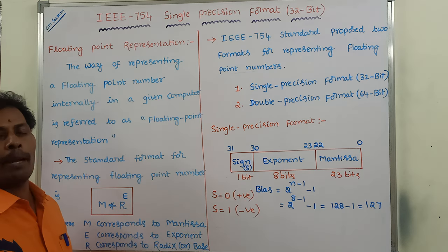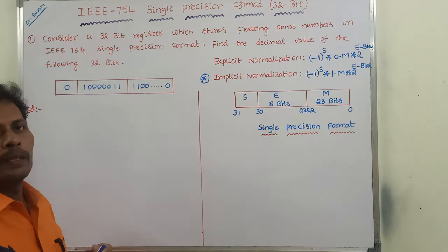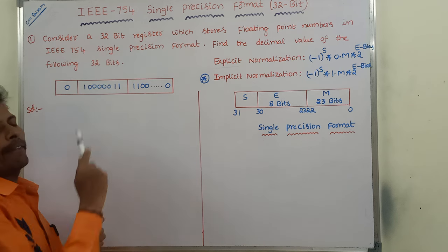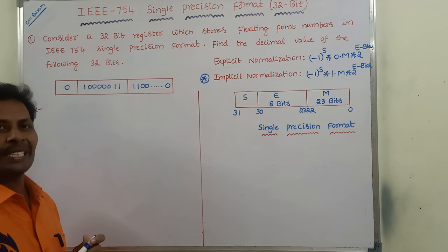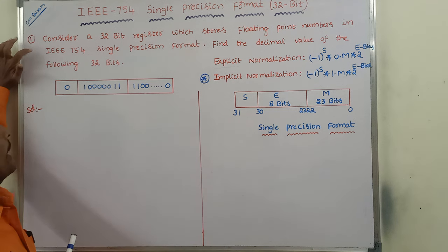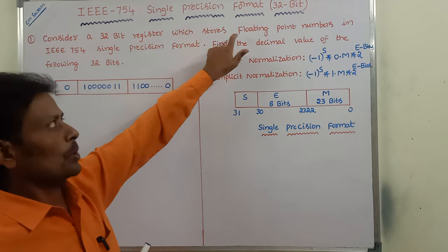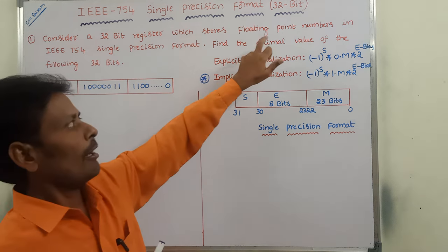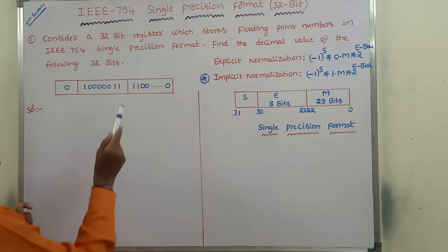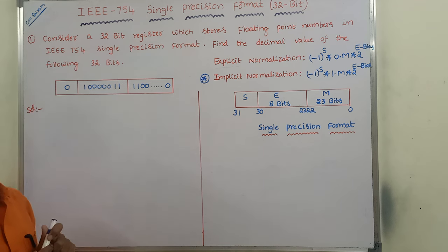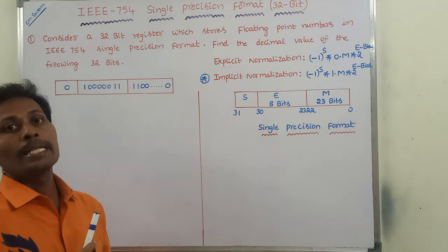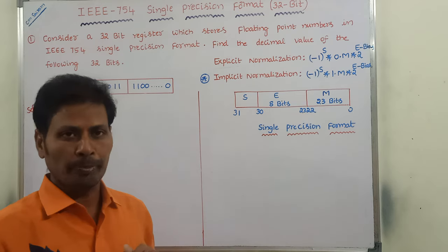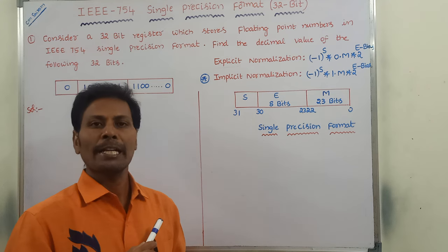Now we can go through an example problem on single precision format. The given problem is: consider a 32-bit register which stores floating point numbers in IEEE 754 single precision format. Find the decimal value of the following 32 bits. We already know that single precision format contains 32 bits, divided into 3 fields.